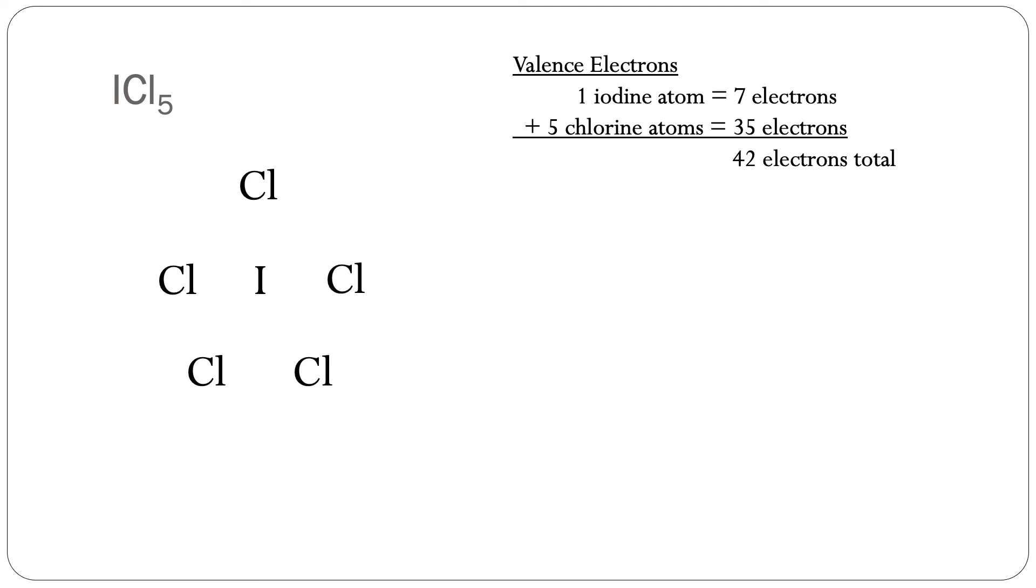Here's an example of iodine pentachloride. One iodine atom and five chlorine atoms equals 42 electrons total. The iodine atom goes in the center and is surrounded by five chlorine atoms.